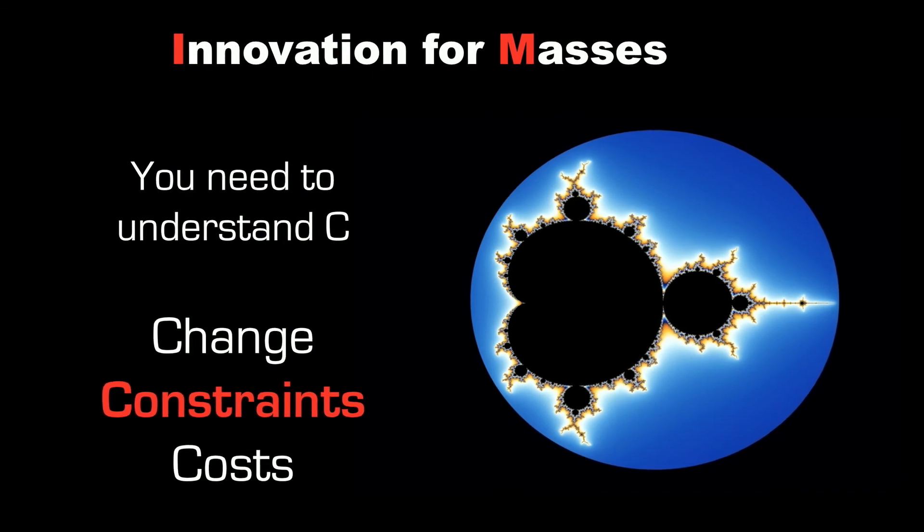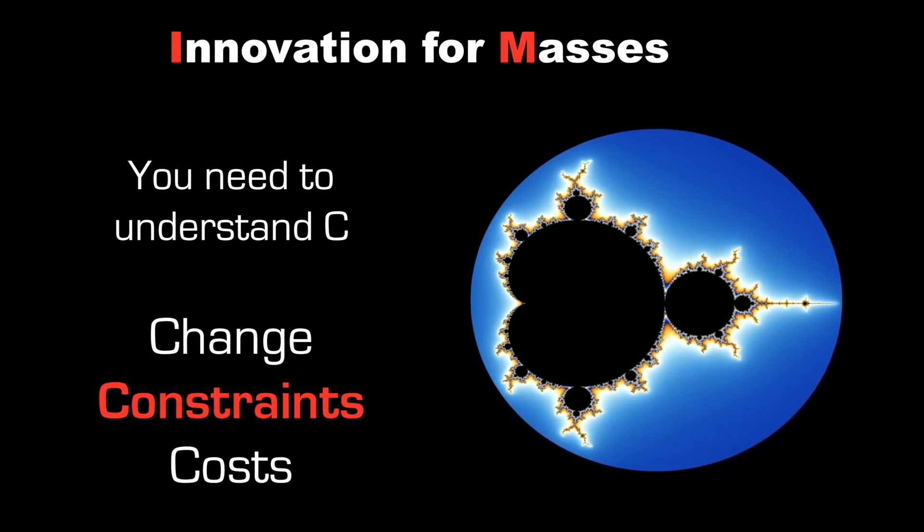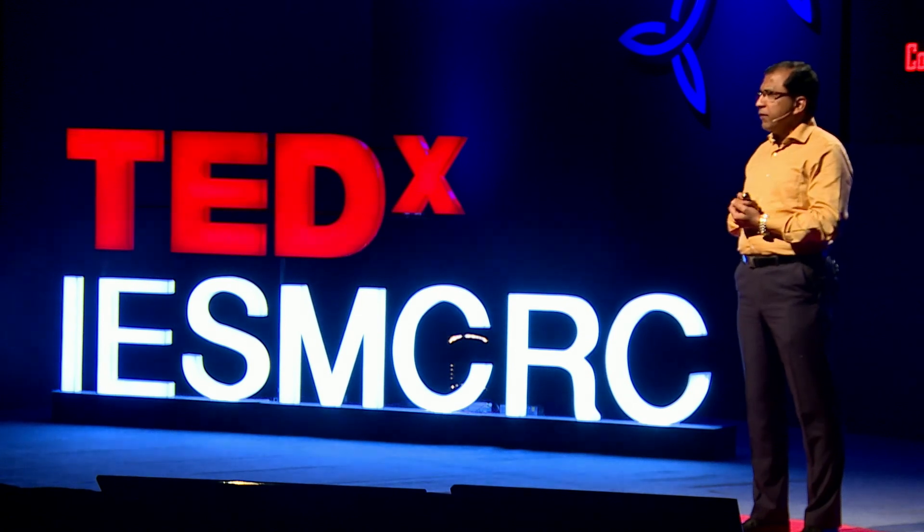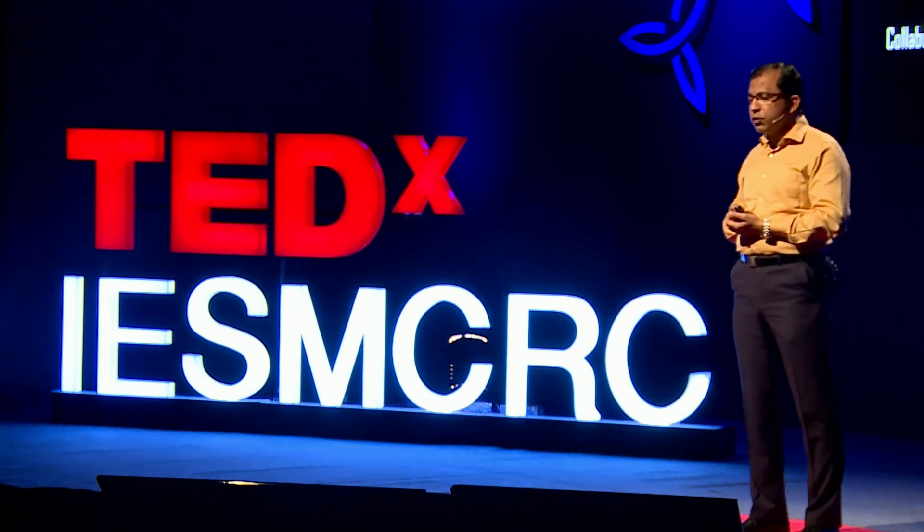The last concept to think about in the innovation equation is C. C is not just change — it is also constraints. You need to understand the constraints of innovation. You can't pluck an idea from one context and bring it to another without understanding the constraints of the new geography or new paradigm. Each paradigm has its own set of constraints, and certain geographies also have costs that impact what you are going to achieve. That, my friends, is the whole equation and mathematics of innovation.